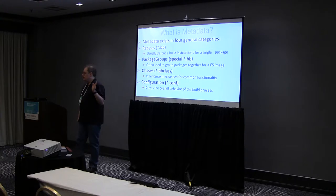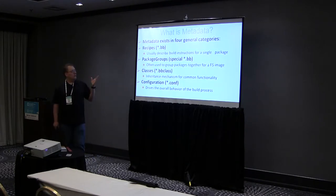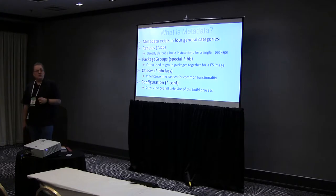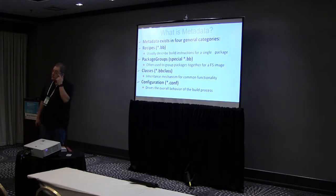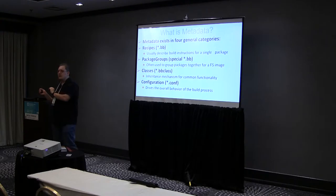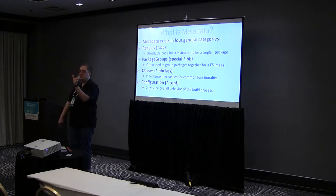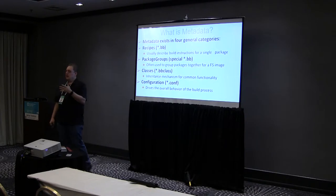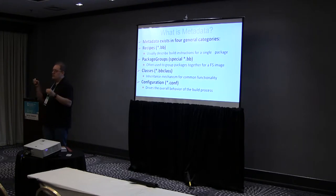There are four specific metadata files we'll talk about. First are .bb files — straight-up recipes. We also have a special type called a package group: a recipe that depends on other recipes. This gives us a way of installing a group of packages with a single name, for DRY reasons. If several images depend on the same group of packages, you list the package group name rather than listing all packages in each image. Anyone familiar with Debian will recognize these as meta-packages — they don't install anything themselves; they just pull in other things through dependencies.